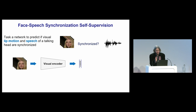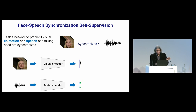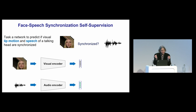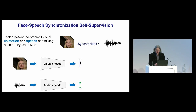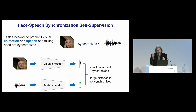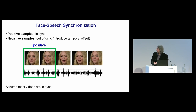The network will have a visual encoder that takes in a video clip and produces a vector, and an audio encoder that takes in an audio clip and produces a vector. These vectors are lists of numbers — maybe 512 numbers — but you can think of each as a point in 3D. The training objective is: if the audio and visual are synchronised, we want these points to be close together; if not synchronised, we want them to be far apart. Very simple.